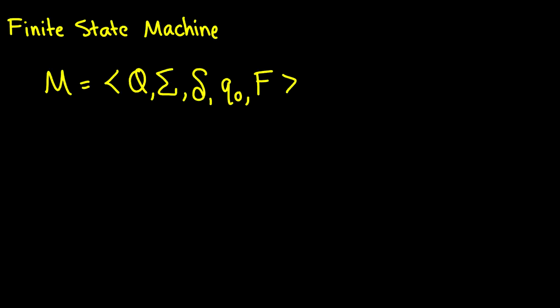A finite state machine M is a five-tuple Q, sigma, delta, Q0, and F, and I'll explain what each one is. Q is a set of states, and these are usually written as Q sub zero all the way up to Q sub n. We have sigma, which is our alphabet, which you should be familiar with.